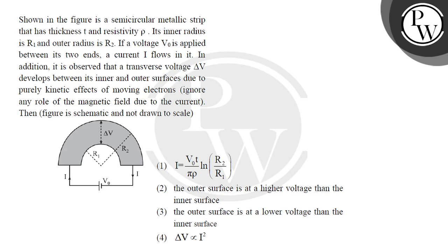current I flows in it. In addition, it is observed that the transverse voltage delta V will develop between its inner and outer surfaces due to the purely kinetic effect of the moving electrons. Ignore any role of the magnetic field due to the current; the figure is schematic and not drawn to scale.